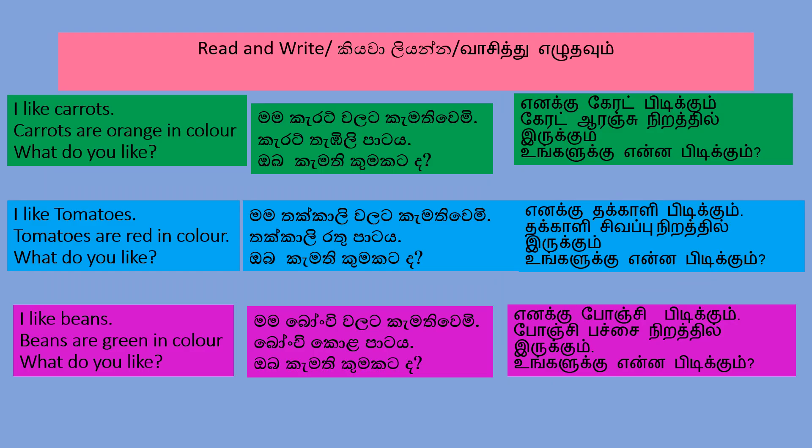Read and write. I like carrots. Carrots are orange in color. What do you like? I like tomatoes. Tomatoes are red in color. What do you like?